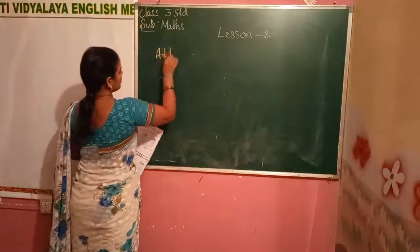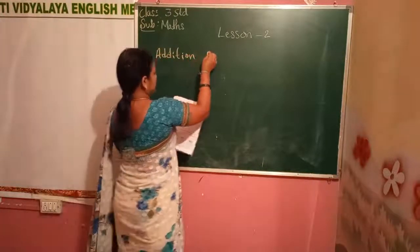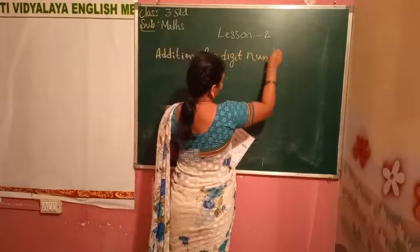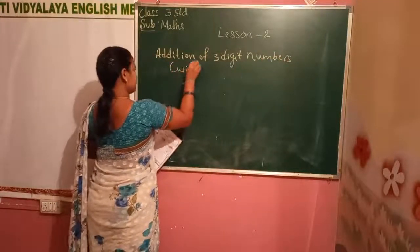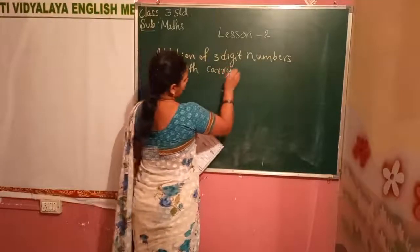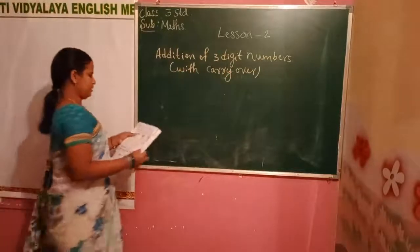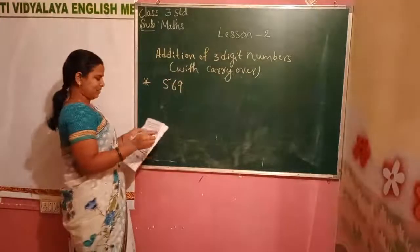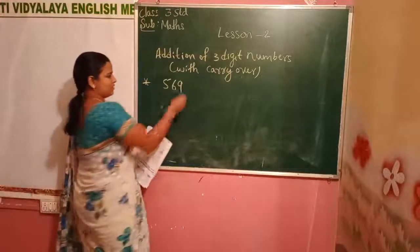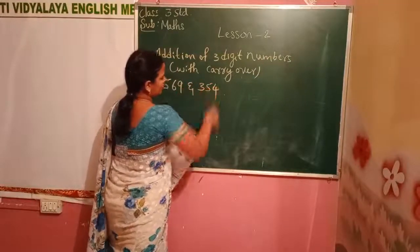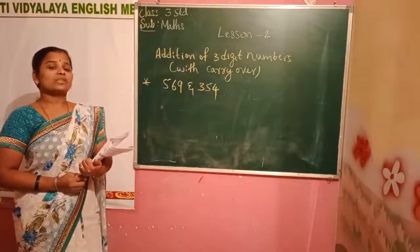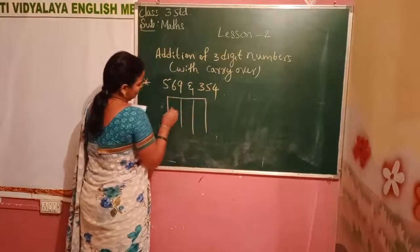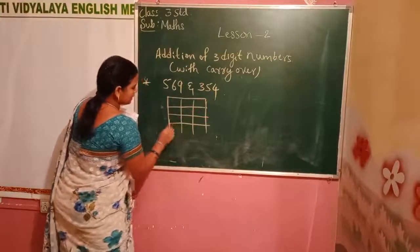Next: Addition of three digit numbers with carry over. Take one example — 569 and 354. Write the numbers in a column. This is carry over. Make a chart with ones, tens, and hundreds, and put the given numbers in the chart.